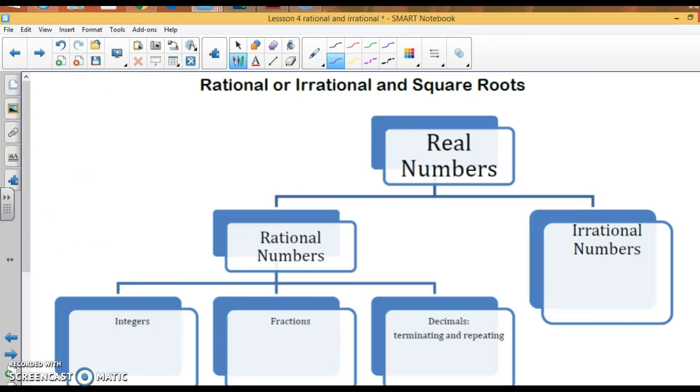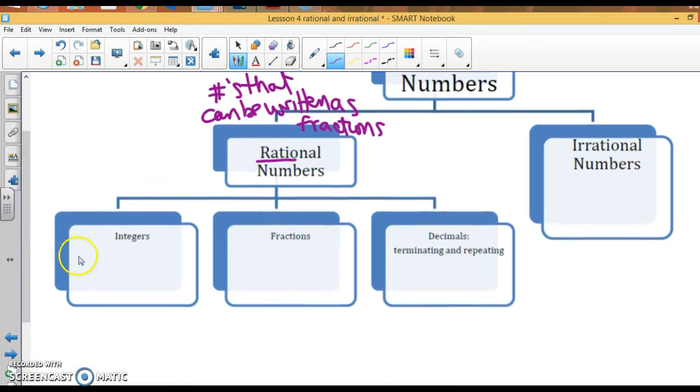All right. Today we're going to talk about rational and irrational numbers and estimating square roots. Everything you know right now, they're called real numbers. Real numbers are broken into rational and irrational numbers. Rational numbers are numbers that can be written as fractions. That's where the word ratio comes from, so ratio, rational. Integers, so negative four, one, zero, eight, they can all be written as fractions. Just think about it, put one under all of them. All integers are rational.